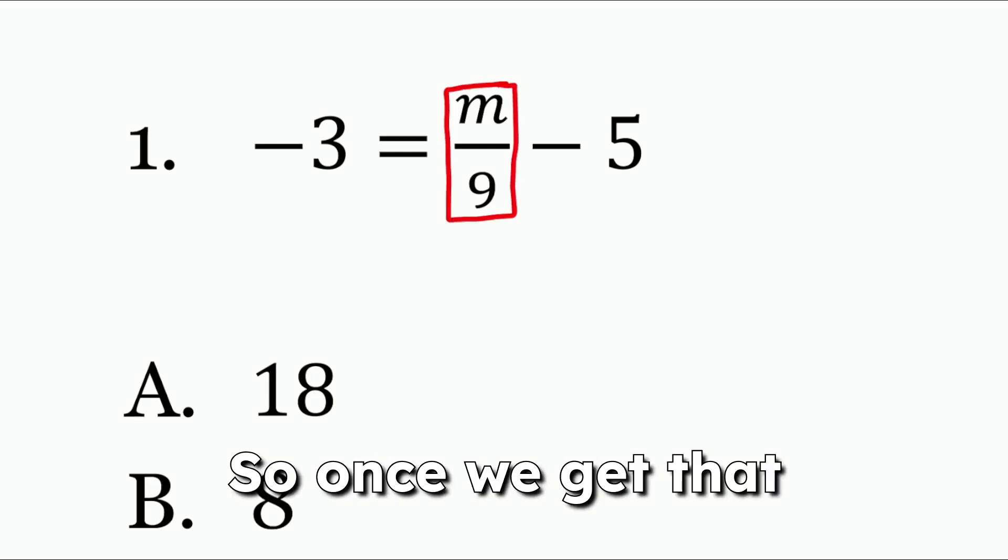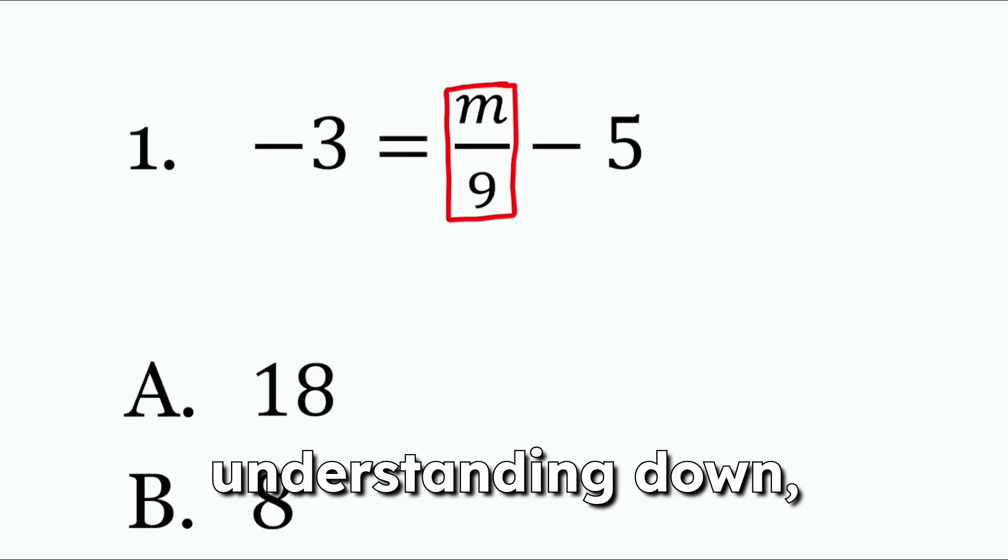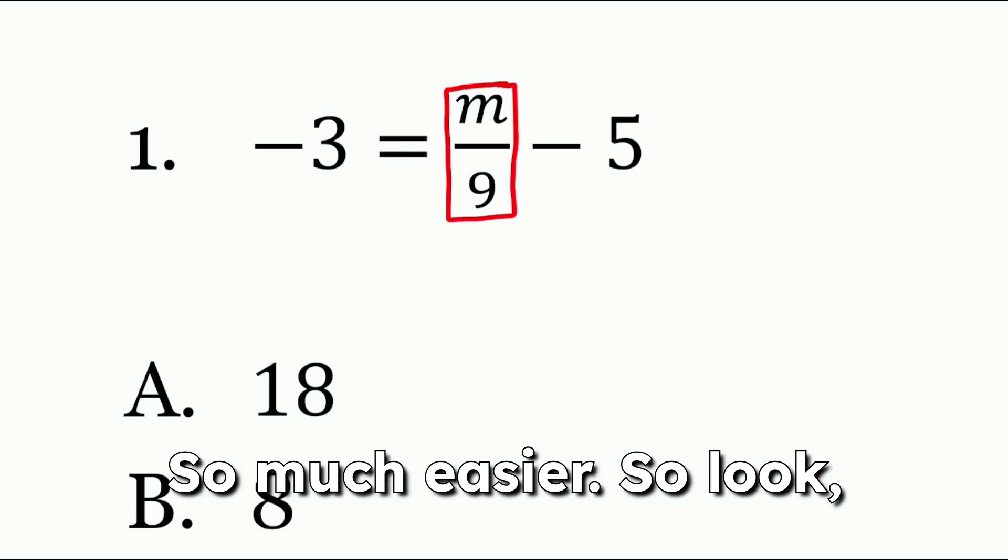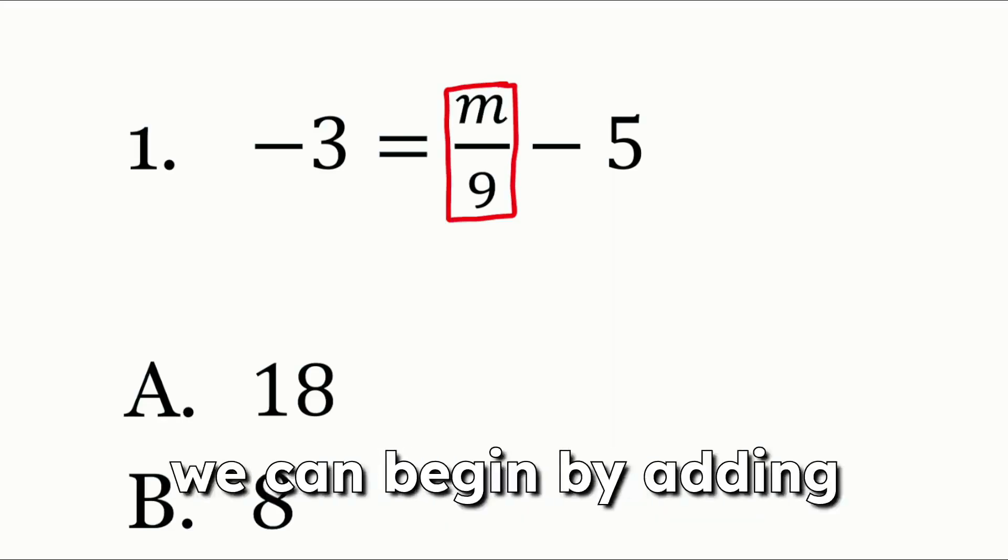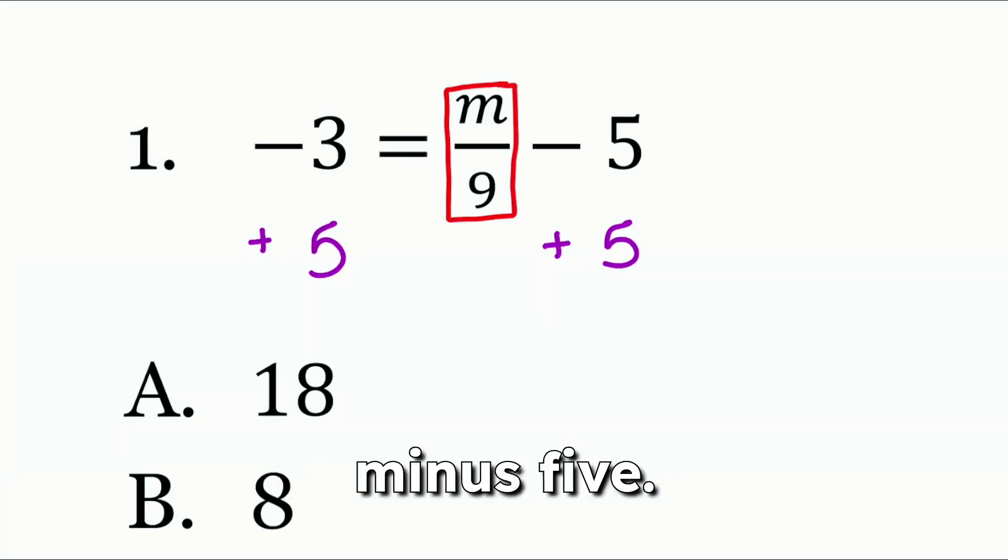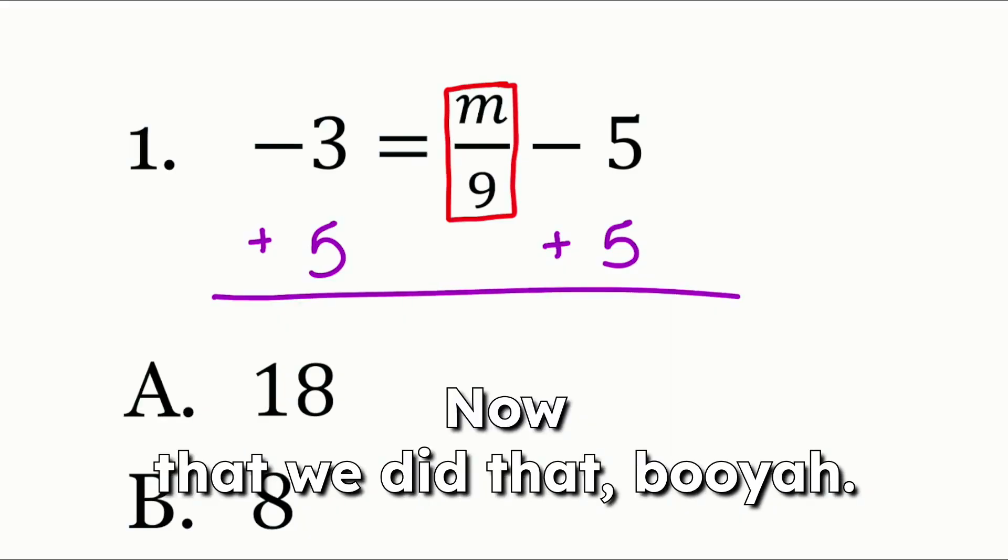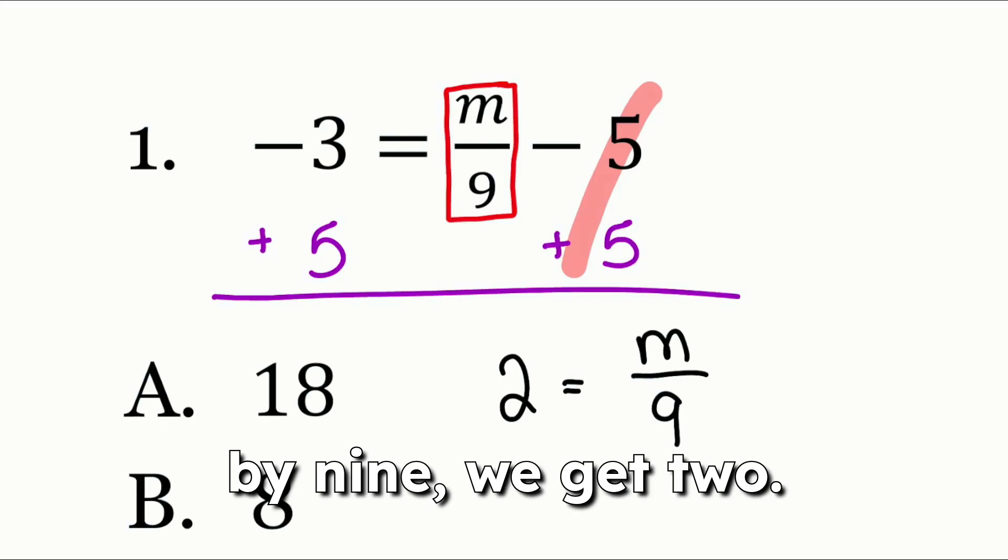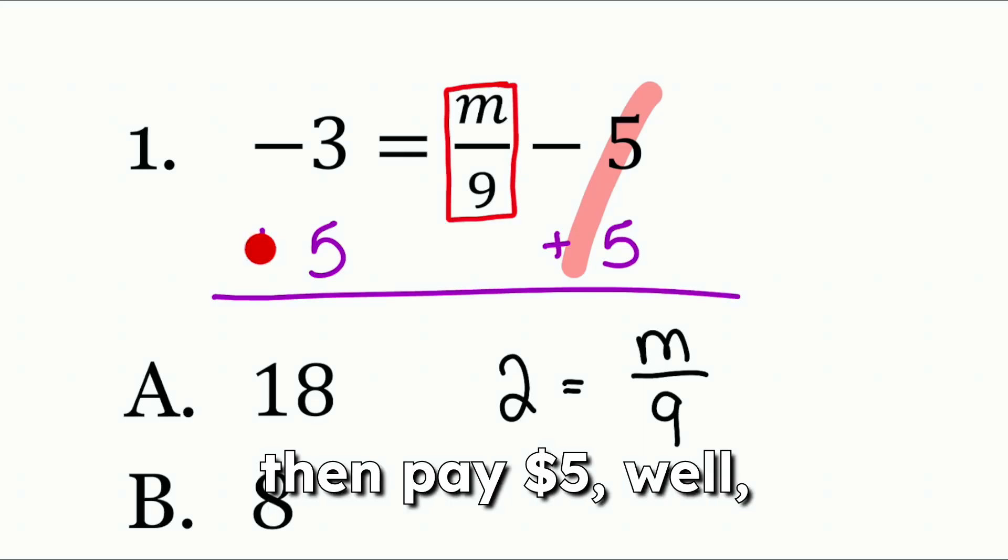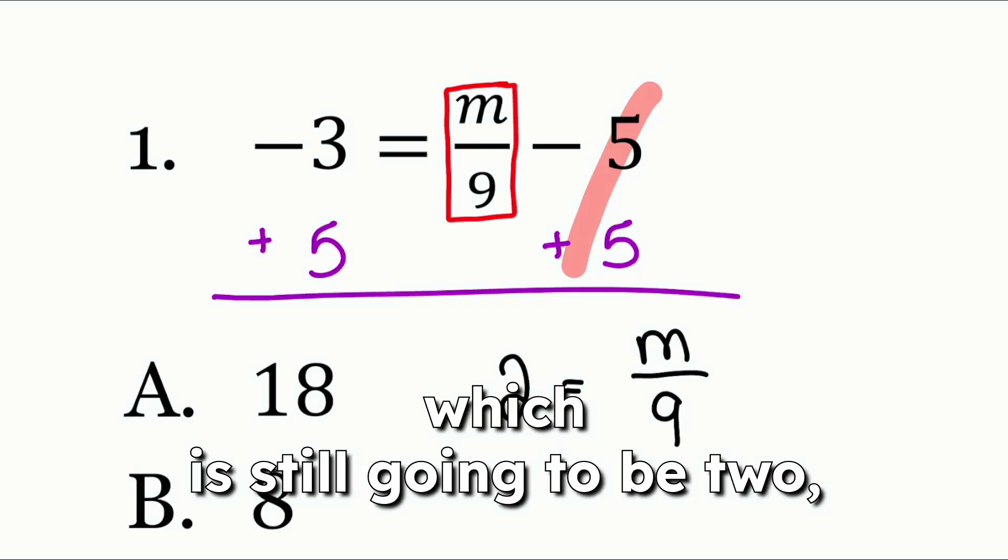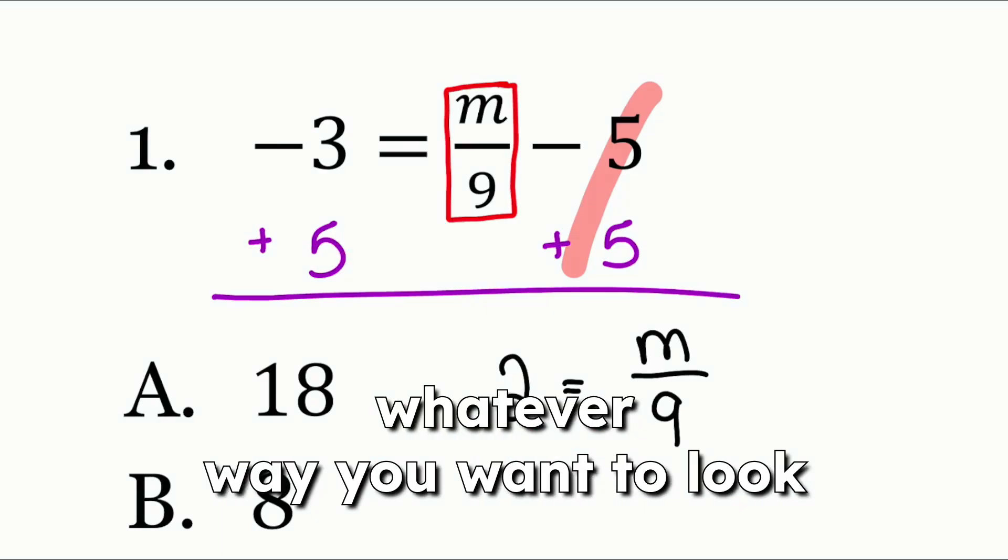Booyah. So once we get that understanding down, that's going to make everything else so much easier. So look, now that we know we can begin by adding 5 to both sides because we know that that would have been the last step minus 5. So now we can add 5. Now that we did that, booyah cancels out on the right side, giving us 2 equals M divided by 9. We get 2 because if you owe $3 and you then pay $5, well now you have 2 surplus. Or you can think about it as 5 minus 3, which is still going to be 2, whatever way you want to look at it. But there you go.